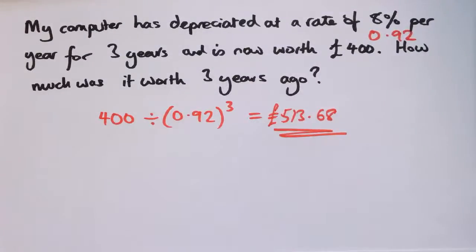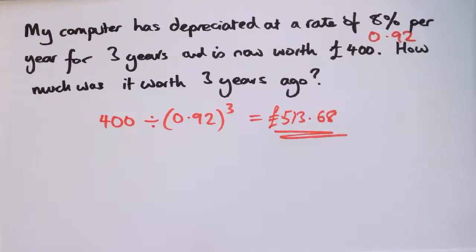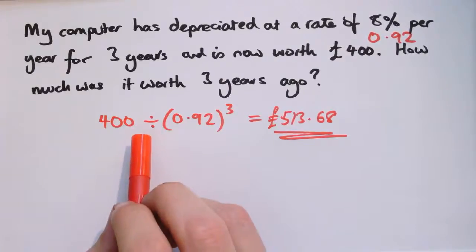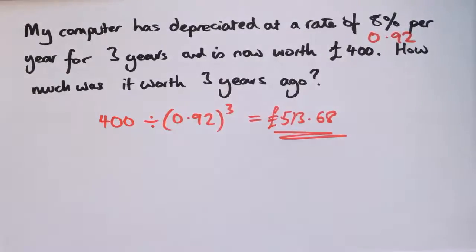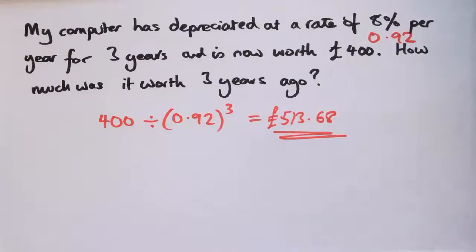So lots of different examples there. The investment example was slightly different — we were finding the interest rate rather than just reversing a scale factor. All the others were about undoing scale factors using division instead of multiplication. Remember: if you're undoing a scale factor, you use division. That's different from a simple decrease where you multiply by a scale factor less than 1.